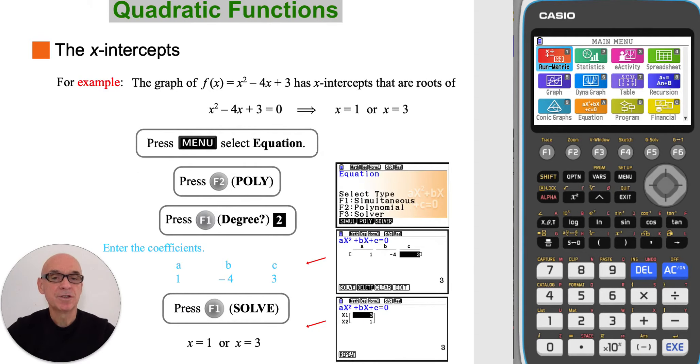The function has x-intercepts that are roots, or solutions, of the equation x squared minus 4x plus 3 is equal to 0. To find these roots on your calculator, from the main menu, select Equation.